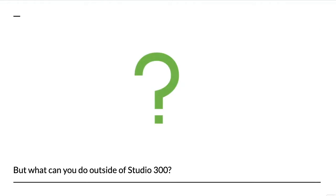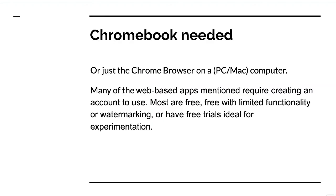But what can you do when you're not in Studio 300? That's kind of the whole point of tonight's class. We have an amazing equipment collection, amazing software with amazing computers and even more amazing staff. But if you're looking to do things another way, maybe outside of our normal hours, a Chromebook or the Chrome browser will really open up a world of opportunities. You need a Chromebook or just the Chrome browser on a PC or Mac — many of these things are just web-based apps.